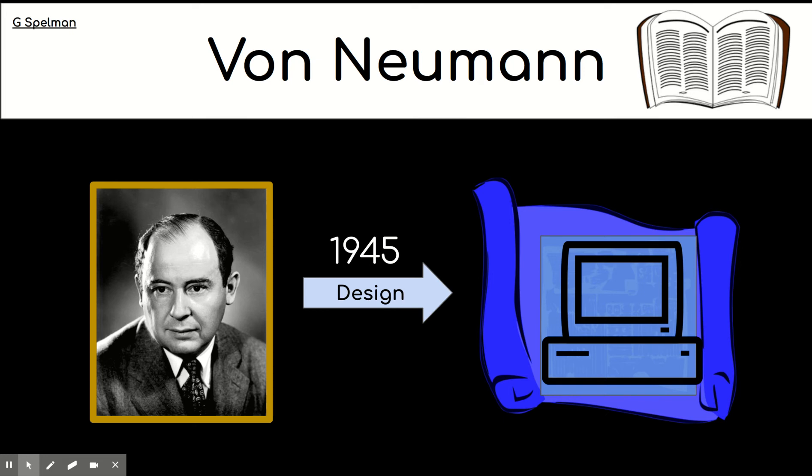On your screens in front of you you can see a picture of John von Neumann and all the way back in 1945 he designed a computer model. He designed it, he didn't build it. So it's like he gave us the blueprint and that is the model that we study at GCSE. So we are studying the von Neumann model.